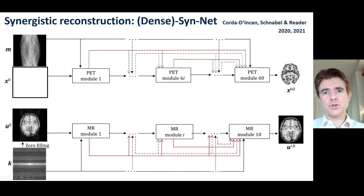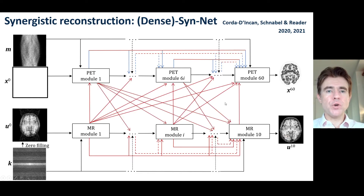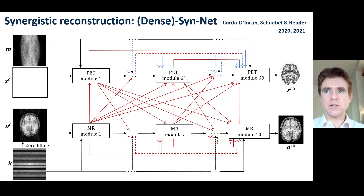This is a quick slide to show where we're going with those kinds of methods. I've been showing you unrolled PET methods, but we can also do the same for MR reconstruction. We can actually join together the two unrolled reconstructions, allowing MR to impact on every PET update and PET updates to impact on the MR updates as well, with a view to achieving some kind of synergistic reconstruction as both modalities are delivering reconstructed images.